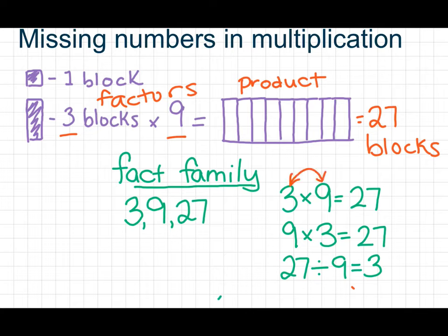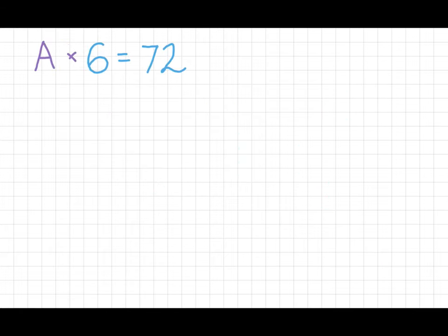And you can swap the factors, and they'll equal the same thing. And then you have 27 divided by 9 is 3, and 27 divided by 3 is 9. So you can swap the factors there as well.